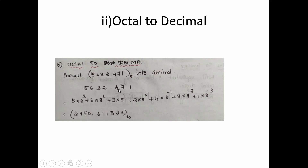For the fractional part: 4×8⁻¹ + 7×8⁻² + 1×8⁻³. When you calculate in a calculator you get 2970.611328 base 10. Writing the base is important.